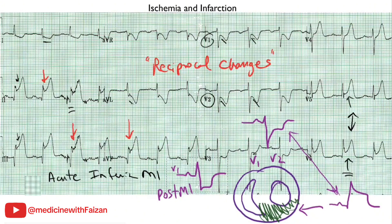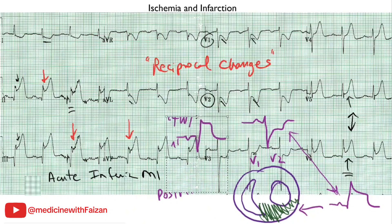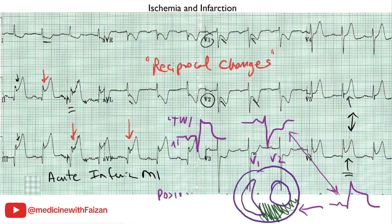If you take that signal and flip it over, what you are seeing is a Q wave and ST segment elevation — identical to an infarction pattern. So in a posterior wall MI, you will see changes limited to V1 and V2, specifically a tall R wave and ST segment depression. These are reciprocal changes — the mirror image of what is actually happening in the posterior wall.